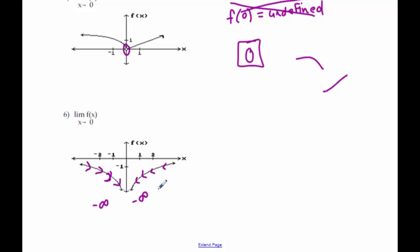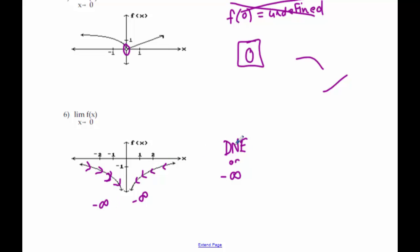Since they're both headed toward the same thing, I would accept two different answers. On my key I said it did not exist, because I don't know what these equations are, so I don't know if one of them is getting to negative infinity faster than the other. But since they are both going to negative infinity, if you wrote negative infinity as an answer I would take that — because they are both going to the same thing. So either answer is okay: does not exist or negative infinity.